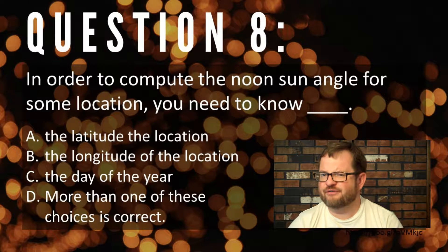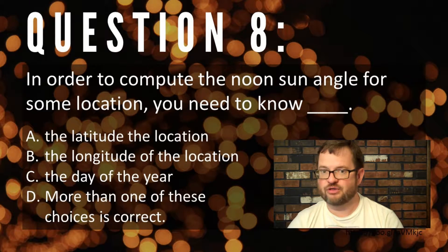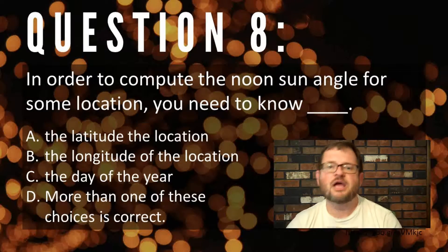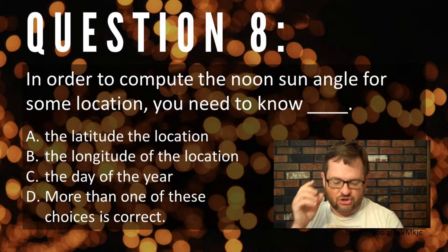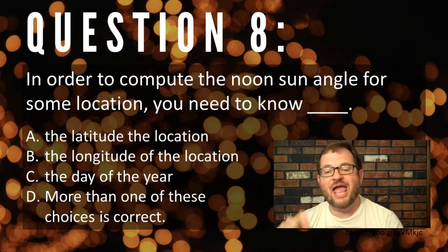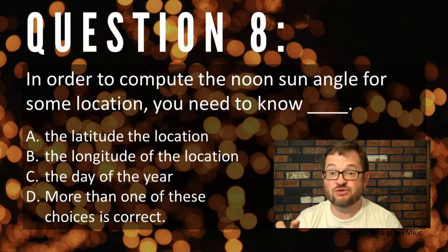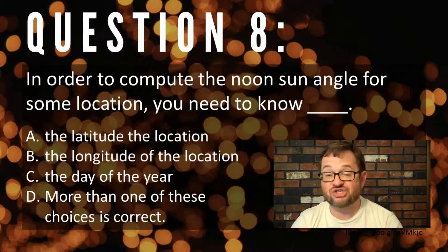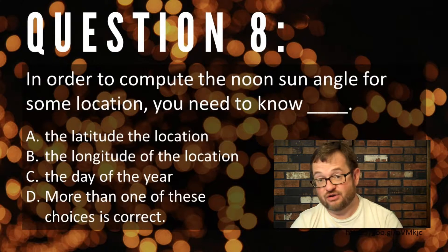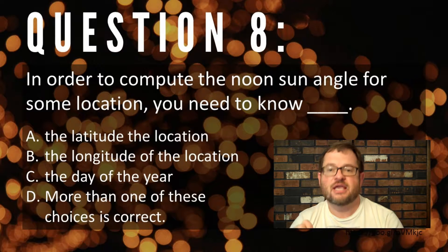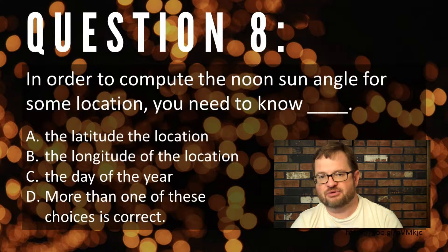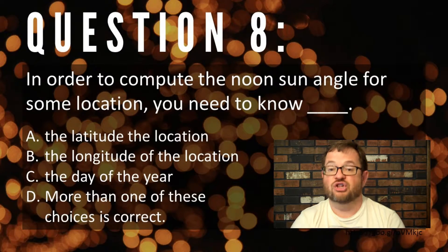Good job! I know it's often hard to pick choices like 'more than one of the above,' but it's correct. You need to know both A and C — the latitude of the location in question and the day of the year you're talking about — if you're going to actually compute the noon-sun angle.